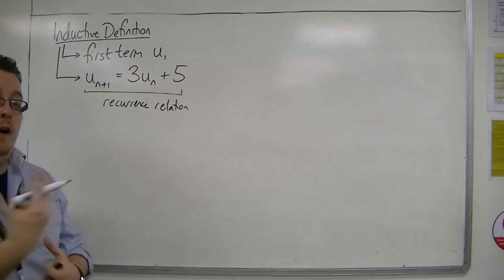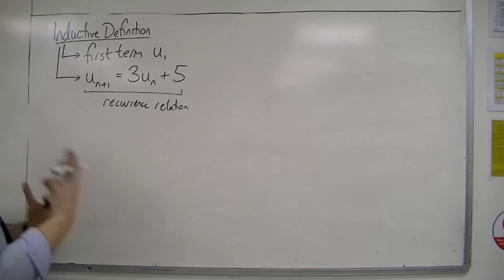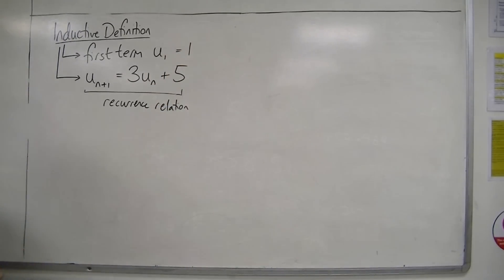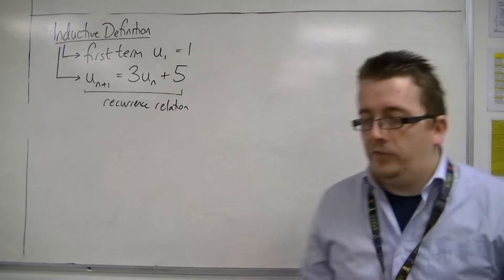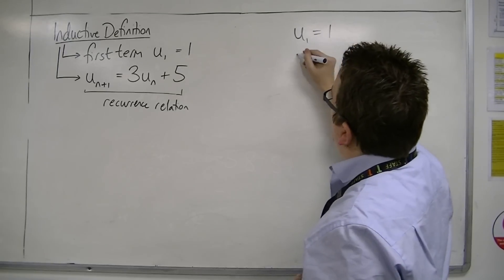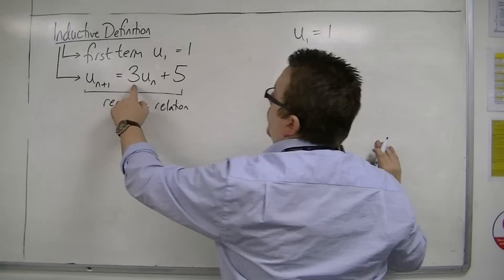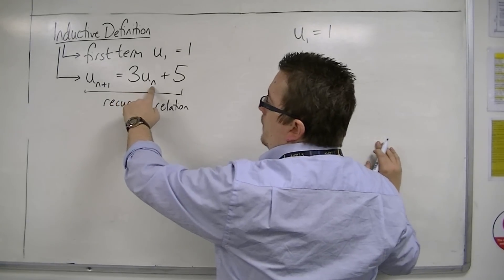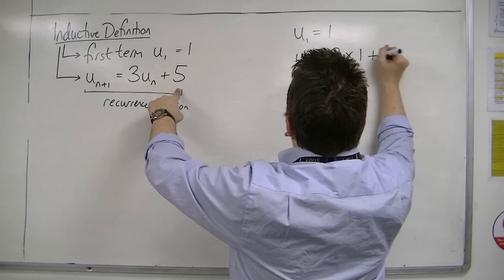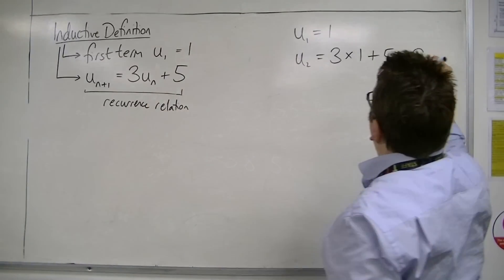The recurrence relation tells you how to get to the next term. So let's say my first term is 1. U1 is 1. Then the second term, U2, is 3 lots of U1 plus 5. So 3 lots of U1 plus 5, which would be 8.